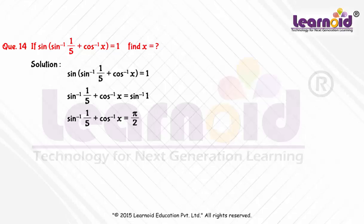We know that sin inverse x plus cos inverse x is equal to pi by 2. So we write pi by 2 as sin inverse x plus cos inverse x.